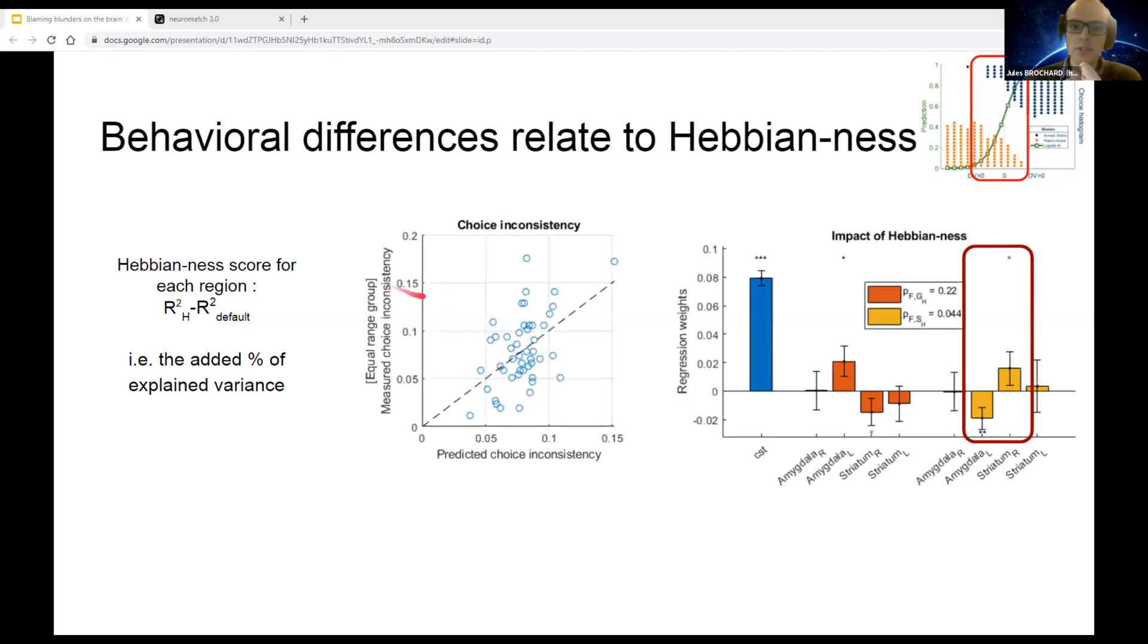And we managed to predict the choice inconsistency of this subject, especially with a contrast between the left amygdala and the right striatum, and a contrast based on the Hebianness of sigmoid model.